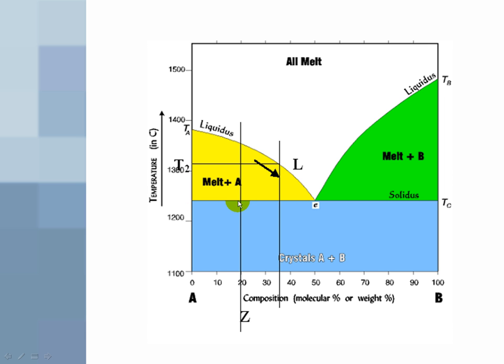You move, ultimately, to the composition line that you started with. If you let the whole system go to equilibrium, you have to end up with what you started with. If you started with 20% Z, you have to end up with 20% Z. And that's the end of the show.